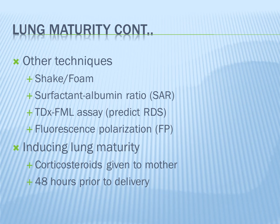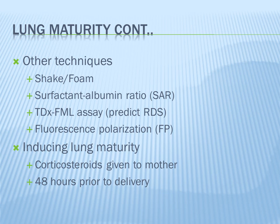Other tests for lung maturity include the shake foam test, where amniotic fluid is mixed with ethanol, shaken for 15 seconds, and a ring of bubbles indicates mature surfactant. There's also the surfactant-albumin ratio (SAR), the TDx-FLM assay as a high predictor of respiratory distress syndrome, and fluorescence polarization (FP). If a baby has immature lungs, corticosteroids can be given to the mother — betamethasone or dexamethasone at 6 milligrams — to induce lung maturity, but it must be done 48 hours prior to delivery.